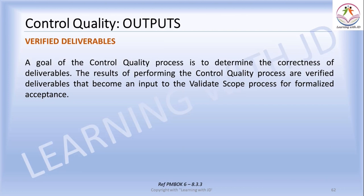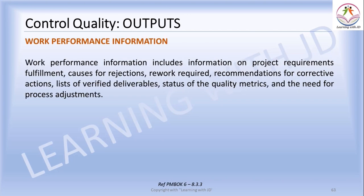Once the deliverables have been checked through sampling and testing, your verified deliverables become an output of control quality. This determines the correctness of the deliverables. The result of performing the quality control process — verified deliverables — becomes an input to the validate scope process for formalized acceptance. Work performance information covers project requirement fulfillment, causes for rejection, list of verified deliverables, status of quality metrics, rework needed, recommendations for action, and corrective actions.